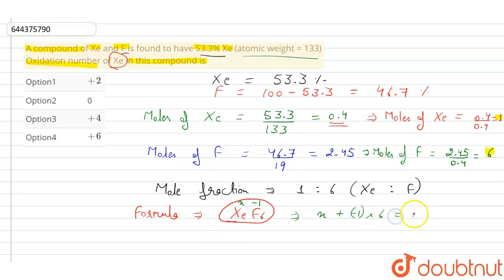So therefore, x plus minus 1 into 6, net charge on the compound is 0. So x minus 6 equals 0. So x equals plus 6. And therefore, the oxidation number of xenon is plus 6.